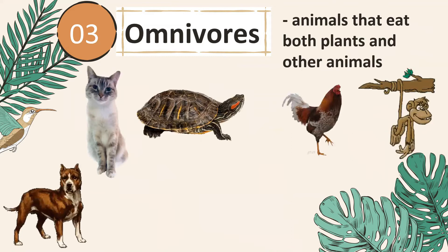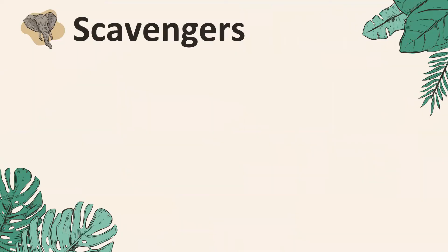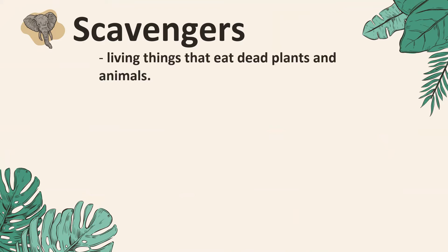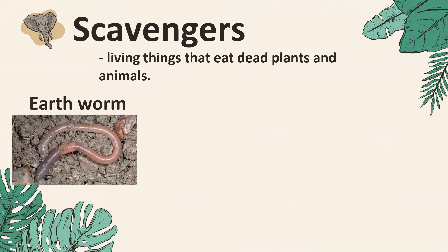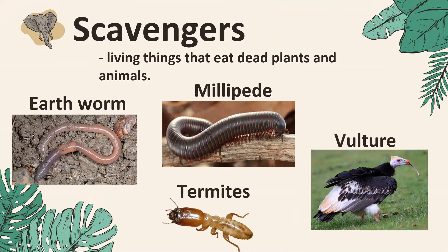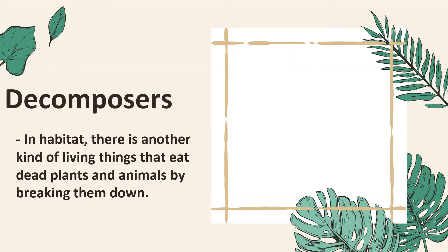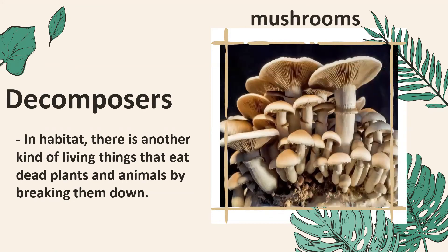In addition, some food chains also have living things that eat dead plants and animals. These living things are called scavengers. Those that break down dead plants and animals are called decomposers. Examples of decomposers are mushrooms.